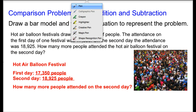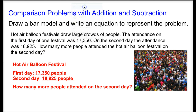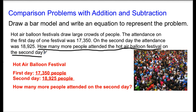We need to make sure that when we read word problems we are attentive to the parts we need to pay attention to. We need to answer this question: how many attended on the second day? The information we need to use was: the first day there were 17,050 people, and on the second day there were 18,925 people.